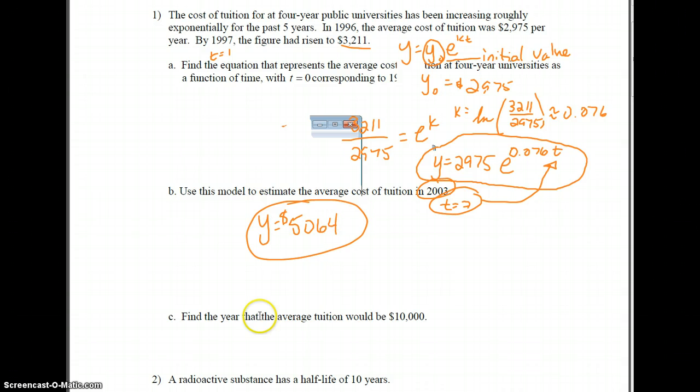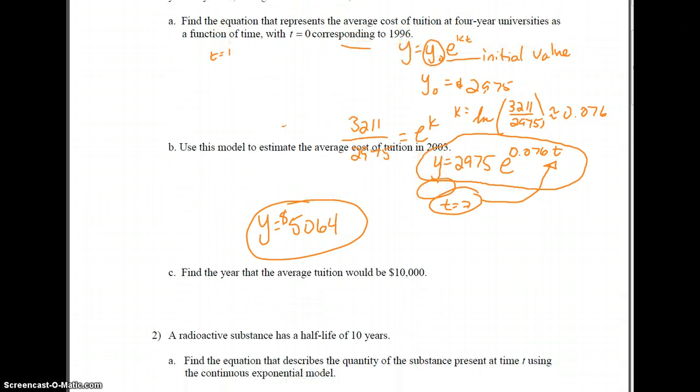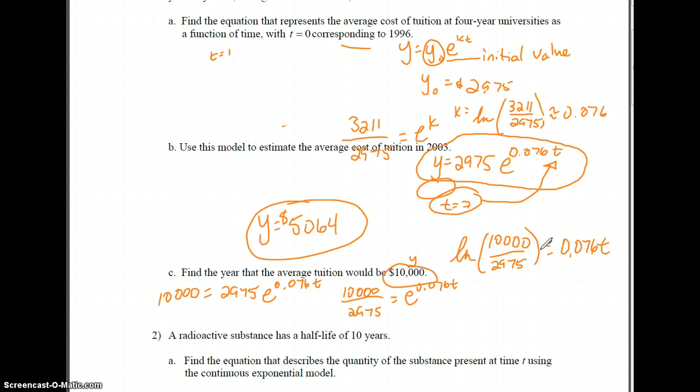Next question here is find the year that the average tuition would be $10,000. We're still using our mathematical model to find this out. This is now our y value, and we're looking for t. So we're going to have 10,000 equals 2,975 e to the 0.076 t. I'm going to divide by 2,975 and have 10,000 over 2,975 equals e to the 0.076 t. I'm going to take ln of both sides, so the natural log of 10,000 over 2,975 equals 0.076 t. Last step, divide by 0.076. So our time is ln of 10,000 over 2,975 all over 0.076.